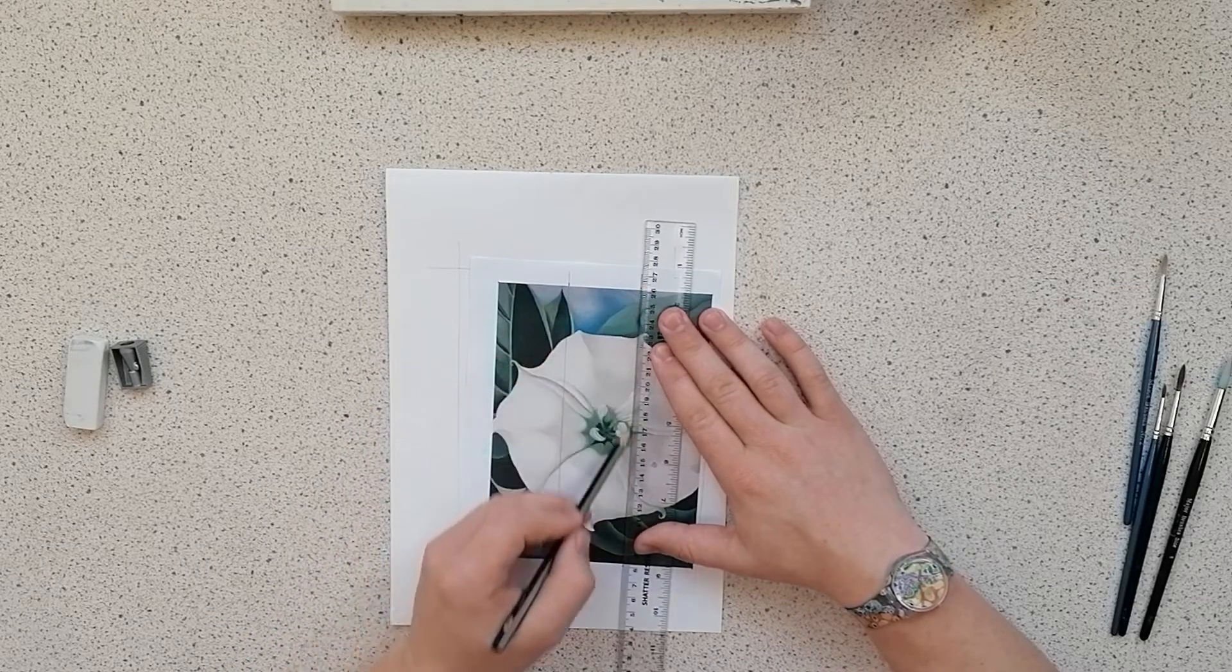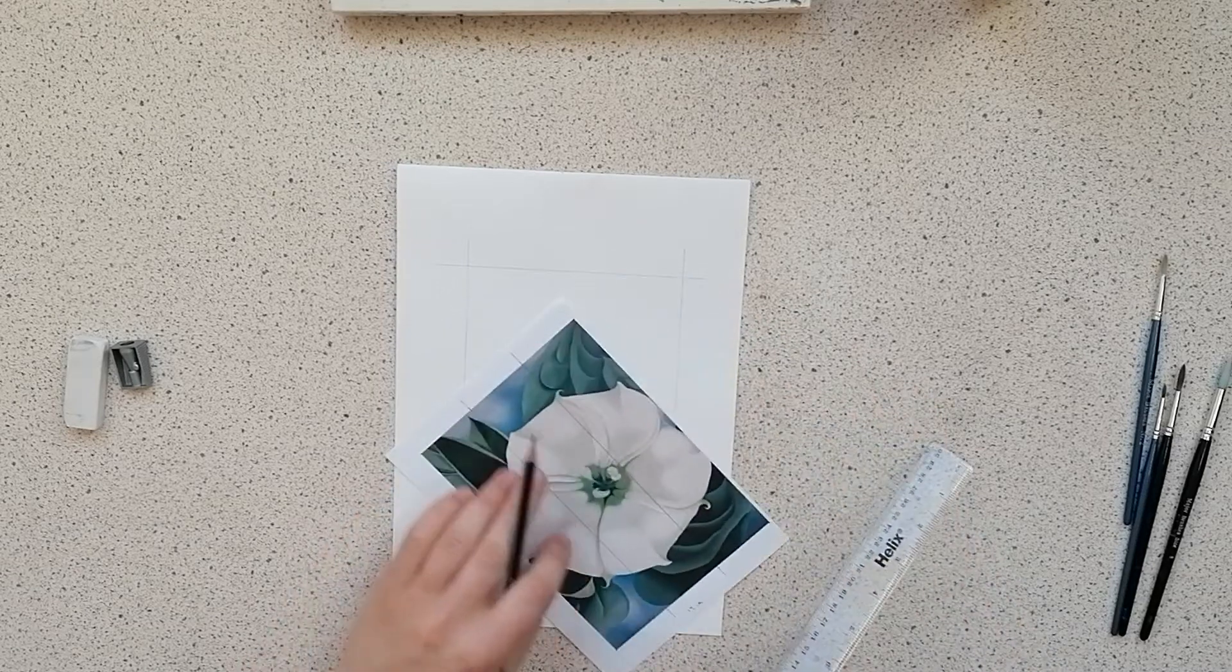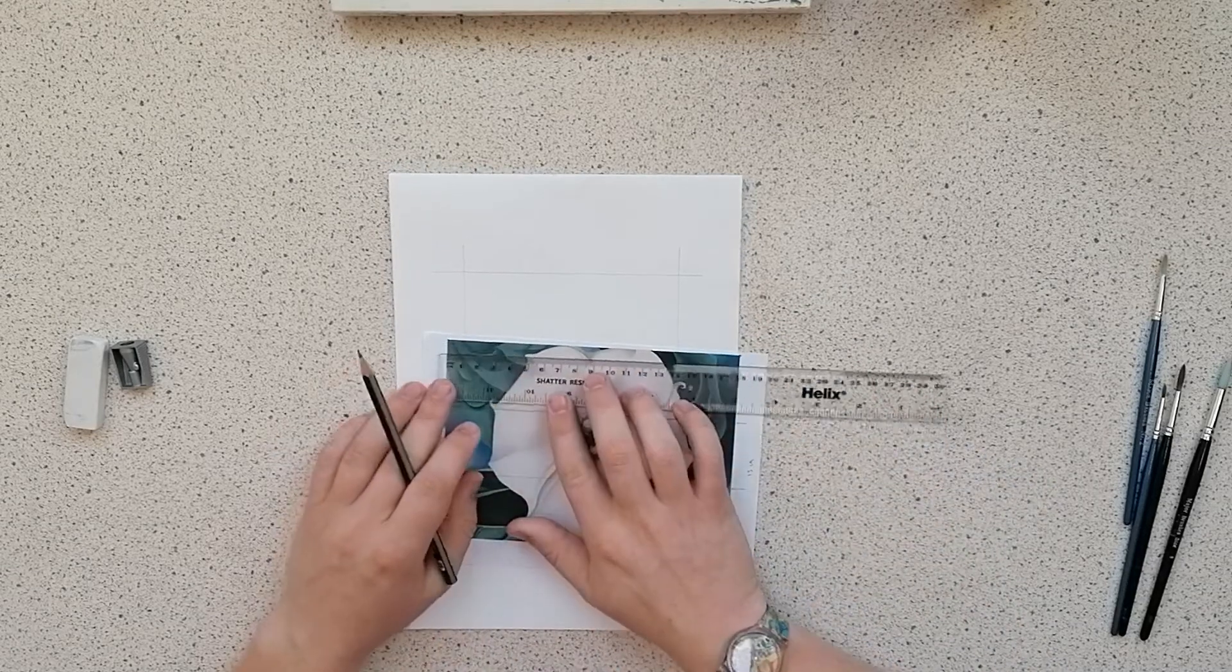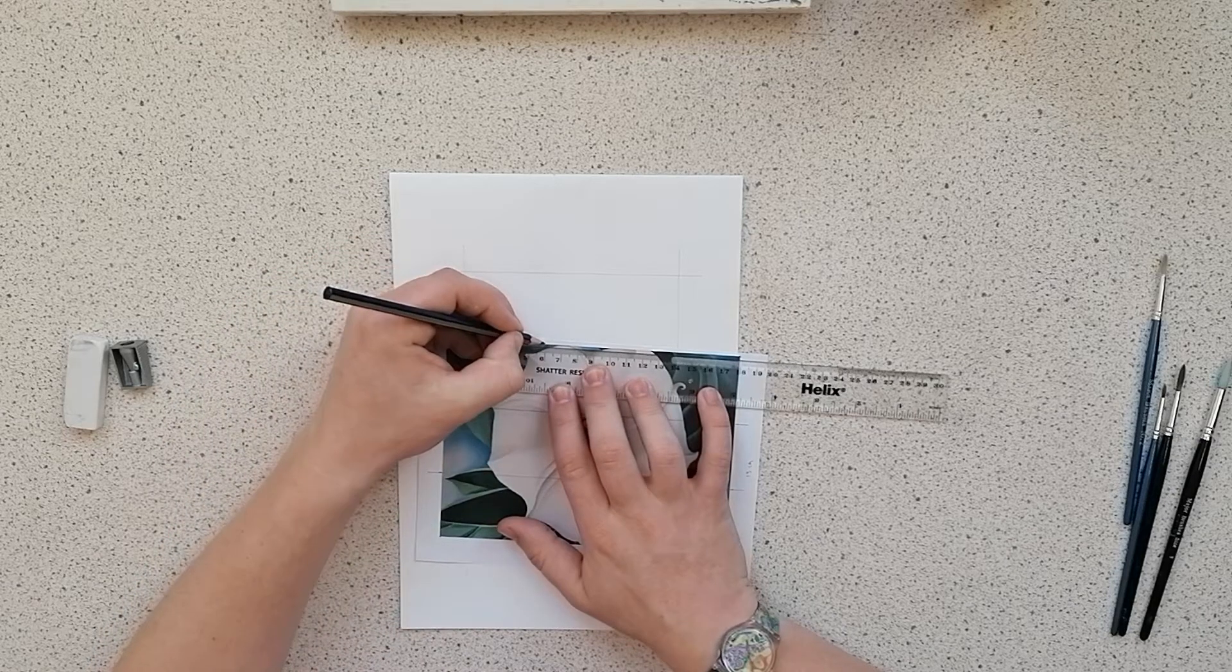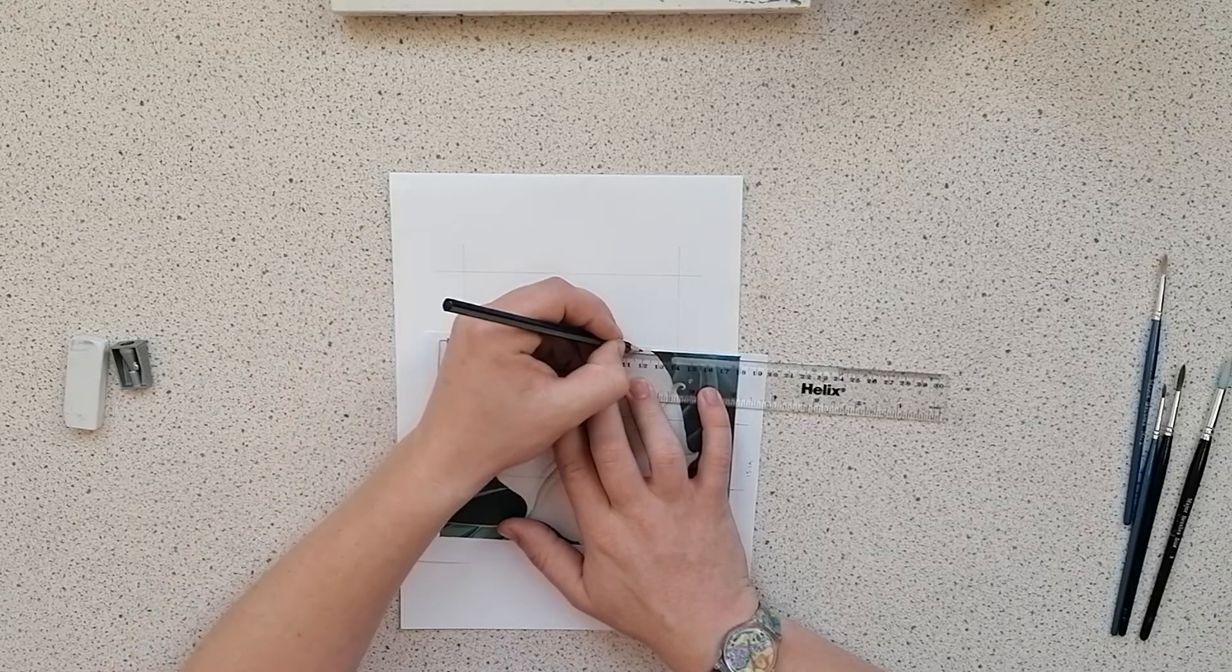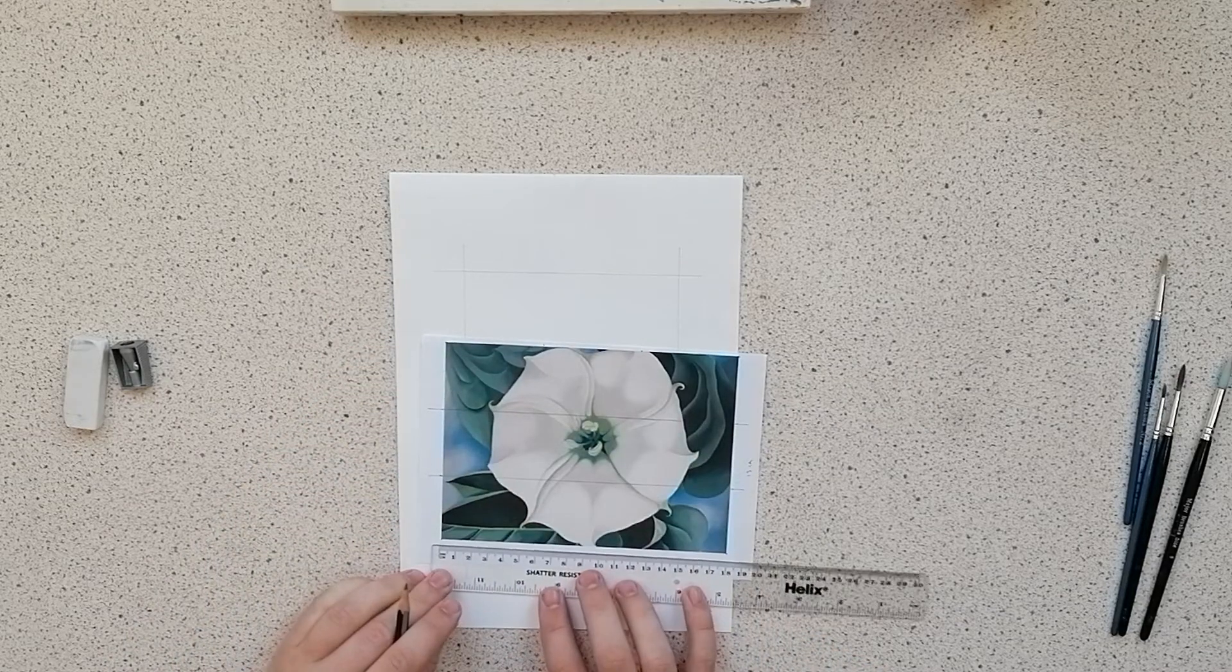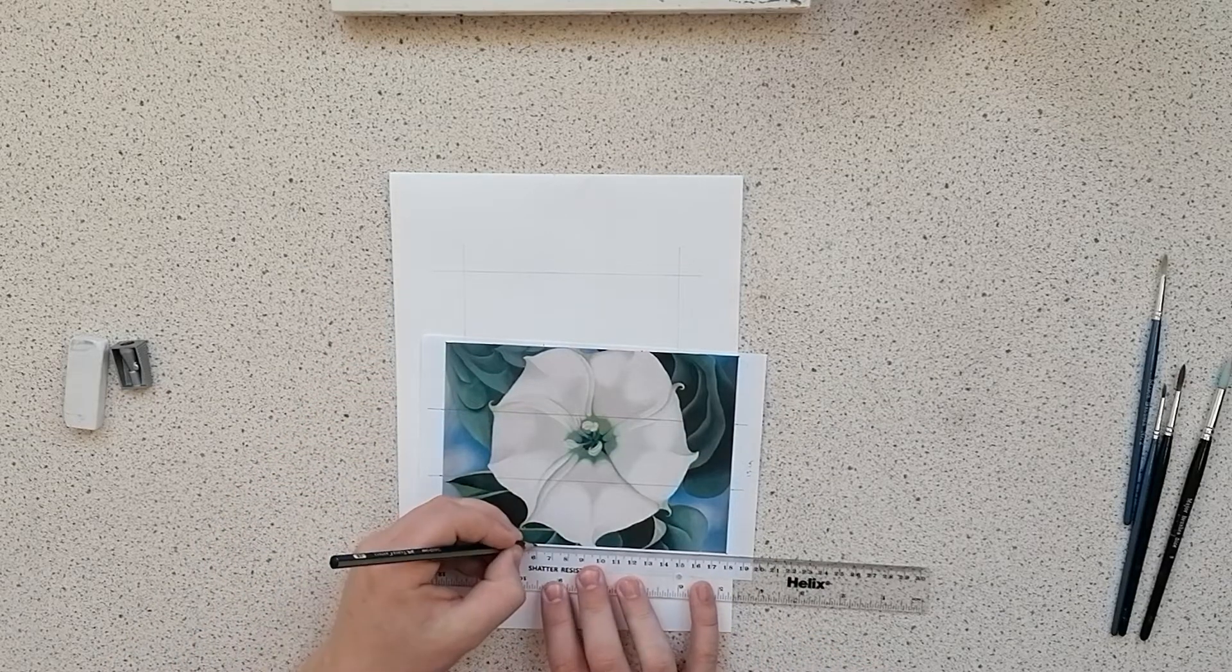Okay, once you join the dots up, just do the same thing on the other side. So my width was 18 centimeters divided by 3, that makes six, so I made marks at 6 and 12 for the top and the bottom and then join them up, which would complete the 3 by 3 grid.